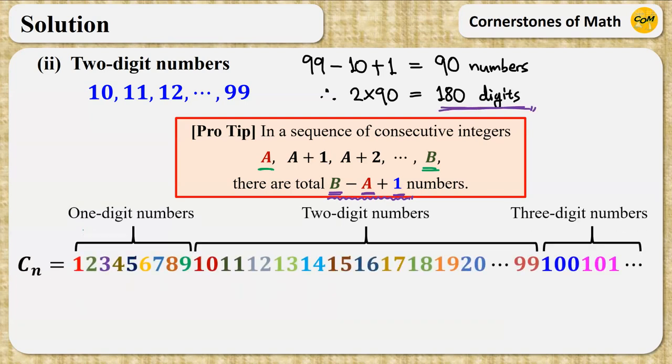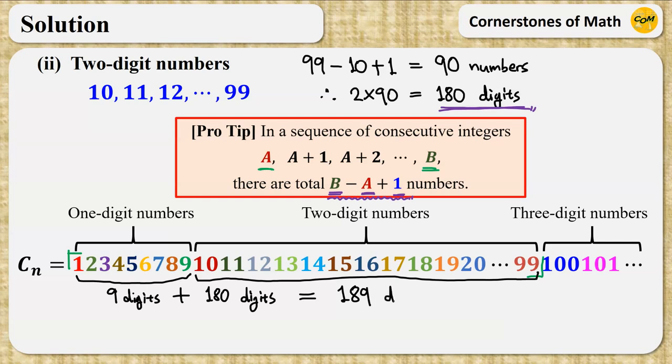Therefore, the string of numbers 1, 2, 3, 4, 5, 6, and so on, all the way up to 99, has 9 plus 180, so 189 digits. So we have 300 minus 189, so 111 digits remaining.